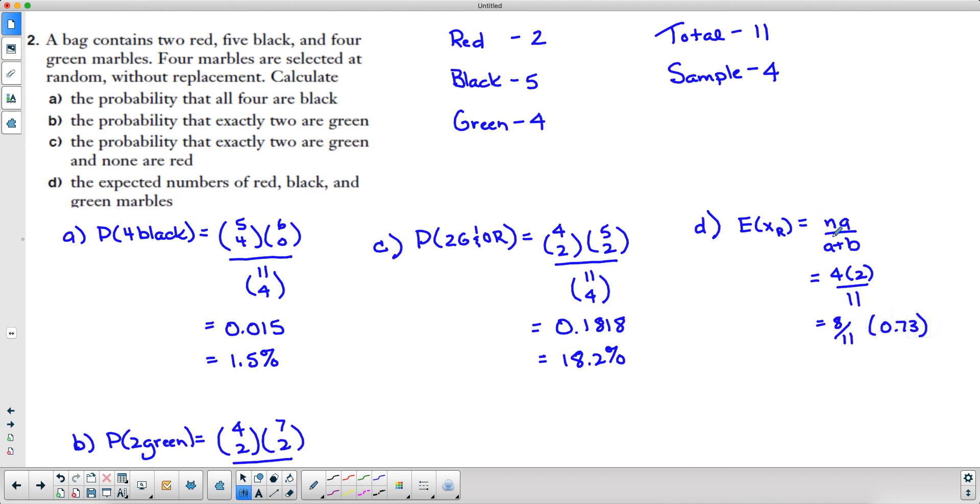Now we're going to do the same thing for the green marbles. The expected value for green, our sample size is still 4 but now we have four desired items which are the green marbles over 11. That's going to give us 16 over 11, which is 1.45 green marbles.